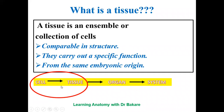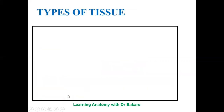They must also have originated from the same embryonic layer, which means that cells that come together to form a tissue must either have originated from the mesoderm, the ectoderm, or the endoderm — remember our lecture on embryology where we discussed the three germ layers. This means that cells from the ectoderm cannot come together with cells from the endoderm to form a tissue; they must have the same embryonic origin.